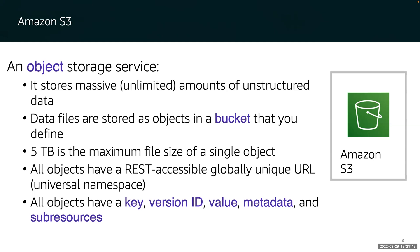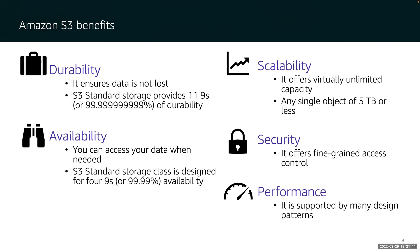The benefits of S3 include many features. S3 Standard class gives you about 11 nines of durability, which means you can afford to lose one document every 200 years. It also provides four nines of availability — your ability to access your data quickly when you want it. S3 offers virtually unlimited capacity, making it very scalable. Amazon S3 also has built-in security features, allowing you to control who can access objects and under what conditions. S3 is highly performant, with first-byte latency measured in milliseconds for most storage classes.